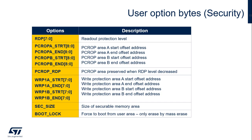The readout protection level enables the readout protection for the entire flash memory. Level 0 means no protection, level 1 means read protection, and level 2 means no debug. The following transitions are supported: level 0 to level 1; level 1 to level 0, which implies a partial or mass erase; and level 0 to level 2. PCROP_ASTRT and PCROP_AEND define the proprietary code readout protection address range A aligned on 512 bytes. PCROP_BSTRT and PCROP_BEND define protection address range B aligned on 512 bytes. PCROP_RDP allows selecting if the PCROP area is erased or not when the RDP protection is changed from level 1 to level 0.